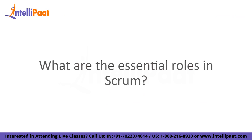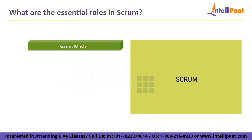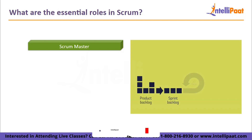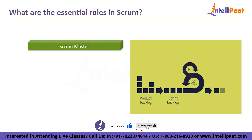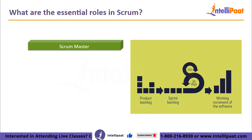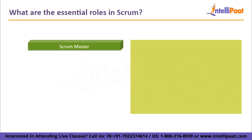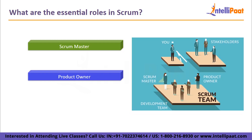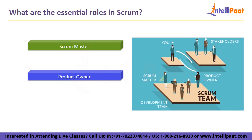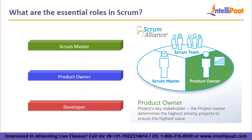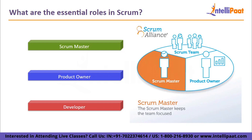What are the essential roles in Scrum? First, the Scrum Master. The Scrum Master uses their expertise in Scrum to assist the team and company be as effective as they can be, through coaching, teaching, facilitating and mentoring. Next, we have the Product Owner, who ensures that the team is producing the most valuable product possible. Lastly, Developers are the Scrum team members who collaborate to develop the product.